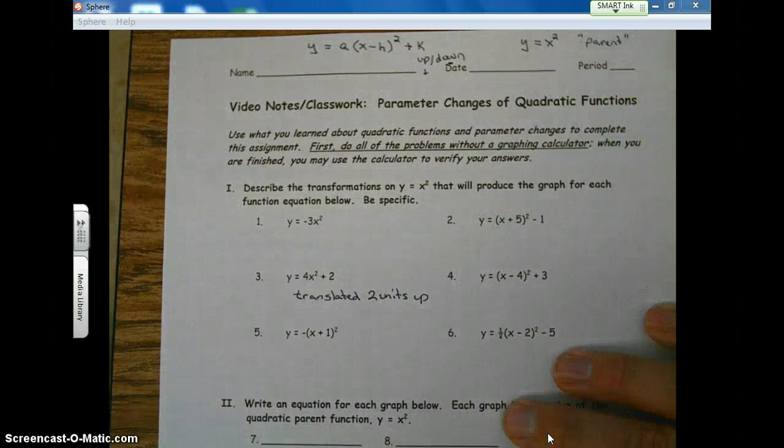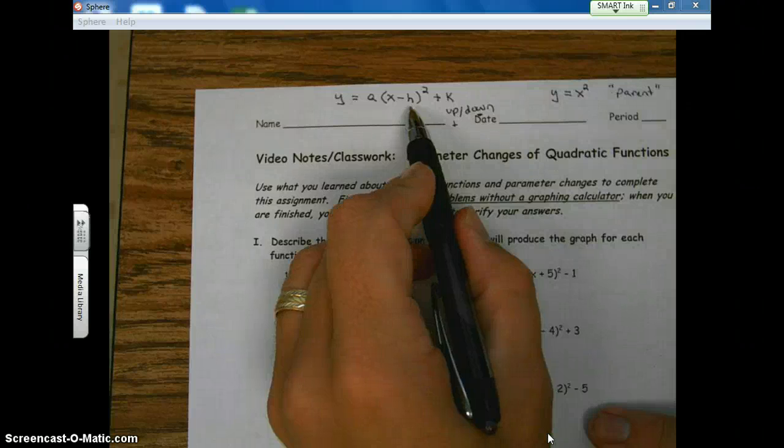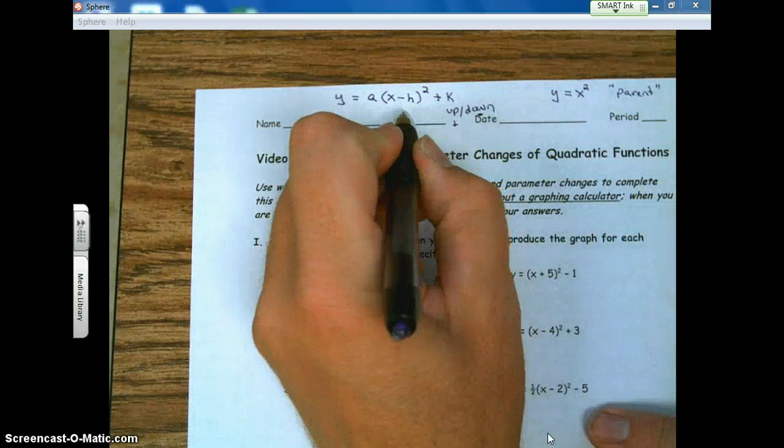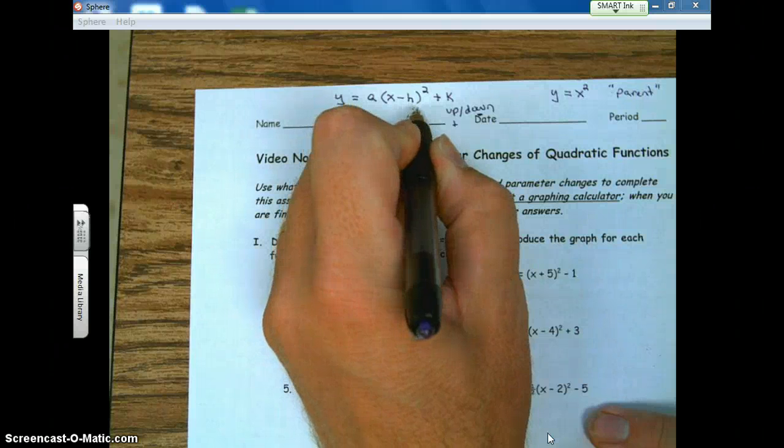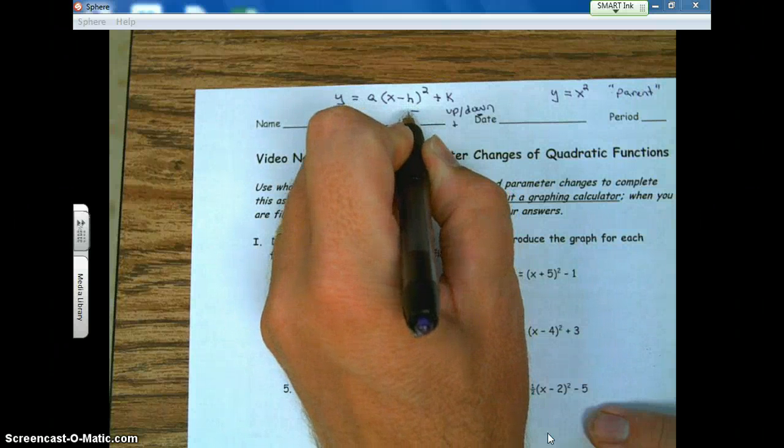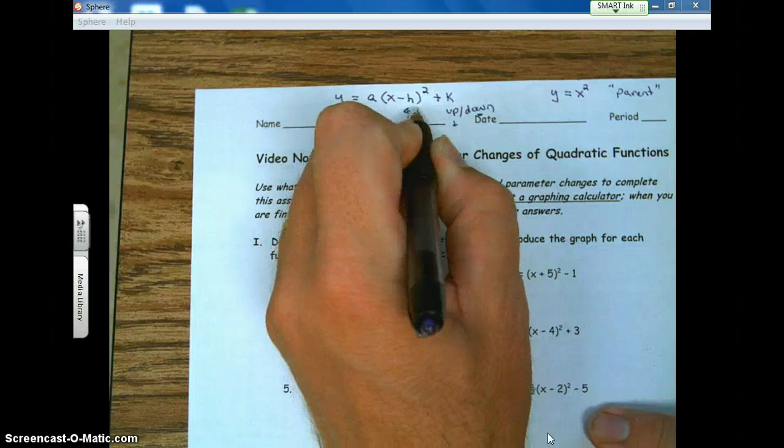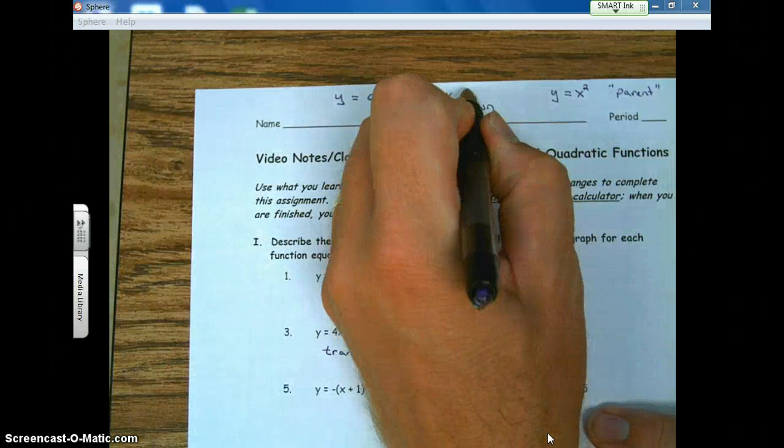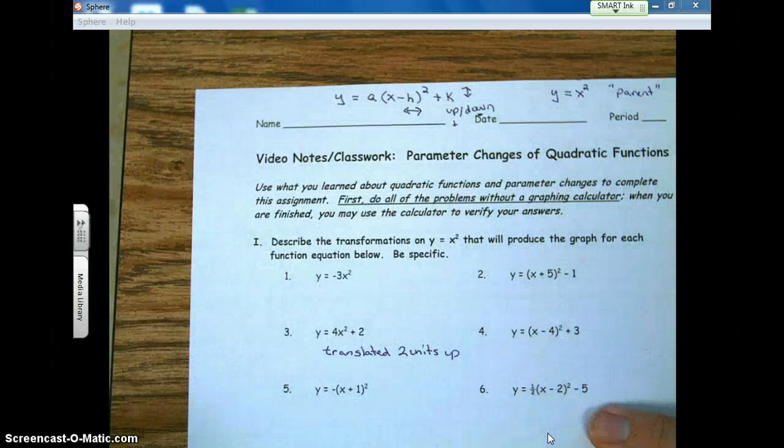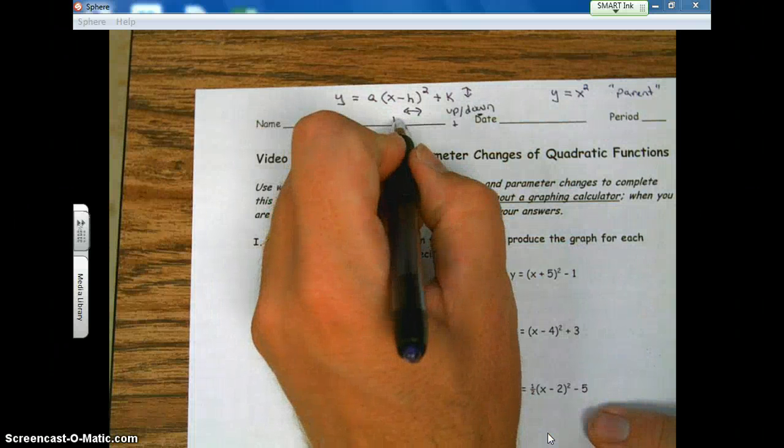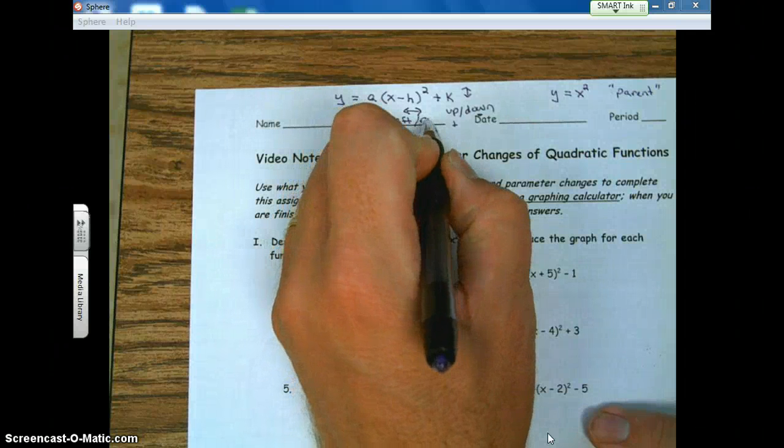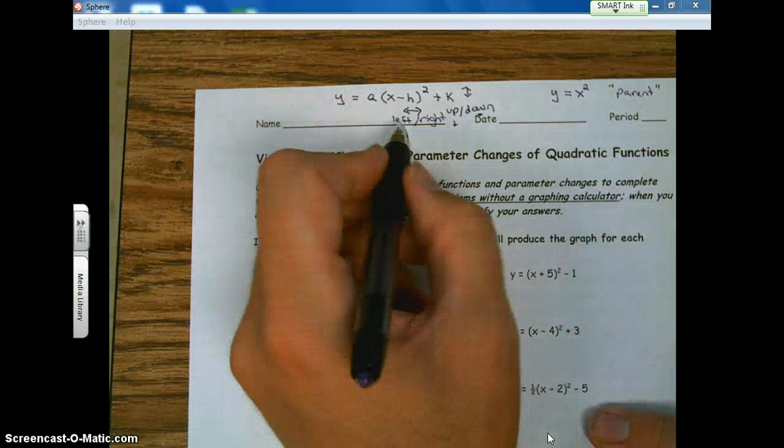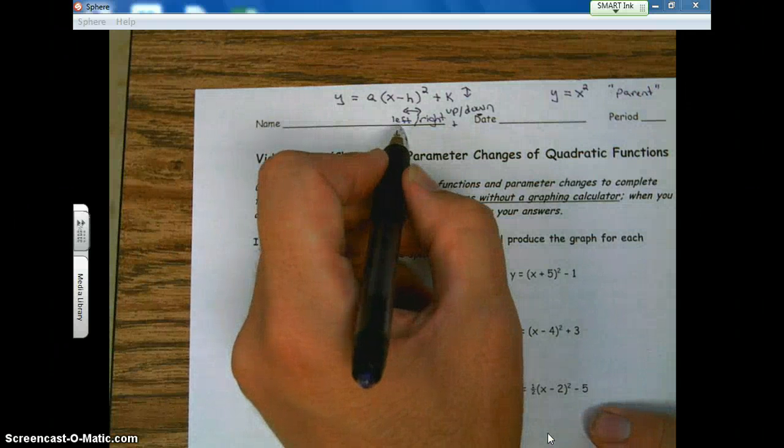All right. Let's talk about another parameter, h. This number shifts or translates the parabola left or right. K, up or down. h, left or right. Here's, pay close attention. Wake up!